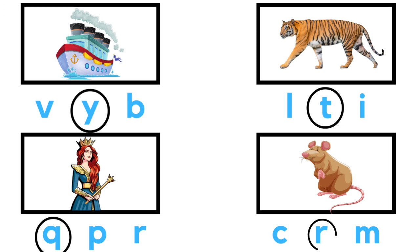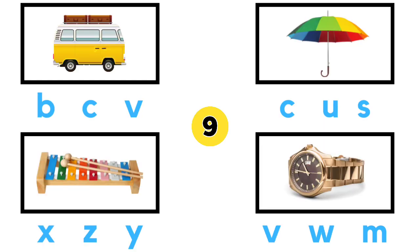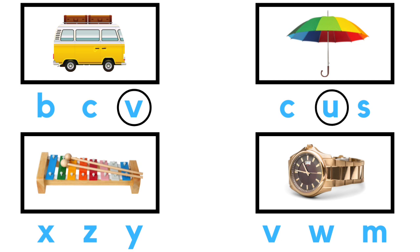R for Rat, V for Van, U for Umbrella, X for Xylophone, W for Watch.